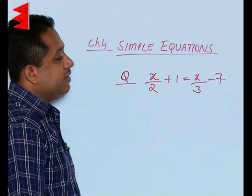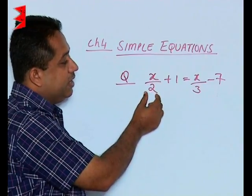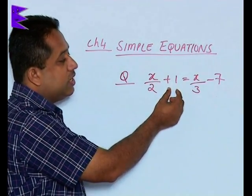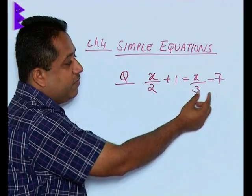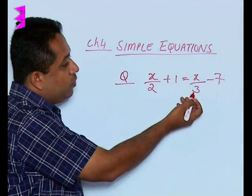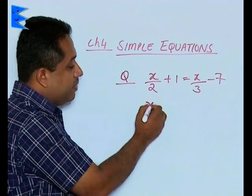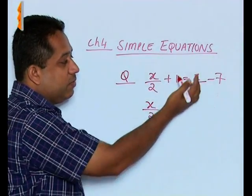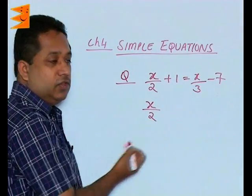Here we find the LHS contains a variable along with a constant term. Here also we have a variable with a constant term. So we're going to bring like terms together.